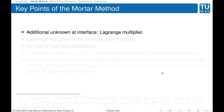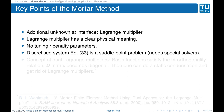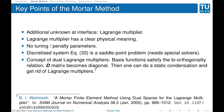Let's recap the key points of the mortar method. We have an additional unknown at the interface — the Lagrange multiplier — which has a clear physical meaning. There are no tuning or penalty parameters, which is an advantage. However, the discretized system is a saddle point problem: there are zero diagonal entries, so we need solvers that can handle systems of this structure. There is a way around this — the concept of dual Lagrange multipliers. If you choose appropriate basis functions satisfying a bi-orthogonality relation, the D matrix becomes diagonal and you can do static condensation to eliminate the Lagrange multipliers. A reference by Wohlmuth is given for more detail.